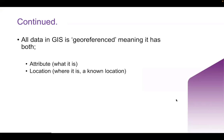All data in geographical information systems are georeferenced, meaning it has both an attribute and a location. An attribute consists of what it is, and a location is where it is — and this has to be a known location. An example of a known location could be latitude and longitude, national grid coordinates, or more implicit references like an address, a postal code, a forest stand identifier, road names, or census tract names. An automated process called geocoding is then used to create explicit geographic references from implicit references, allowing you to locate features such as businesses or events on the Earth's surface for analysis.